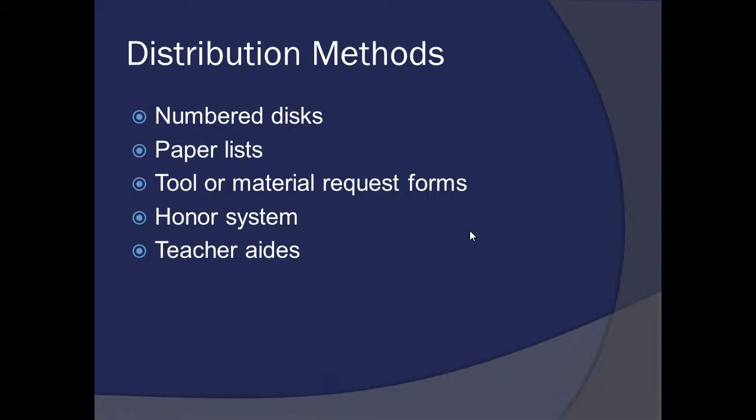A second method is a paper list — the tool room has a form where if John Smith needs a part, the person writes their name, what part it was, the time checked out, and the time returned, with initials confirming return. You can also use a tool or material request form — a printed form the student brings to the tool room requesting the tool. Whoever is working the tool room approves the request, keeps it on file, and notes when it's been returned and signed.